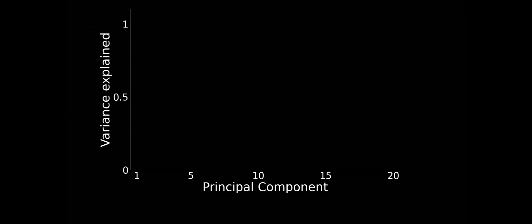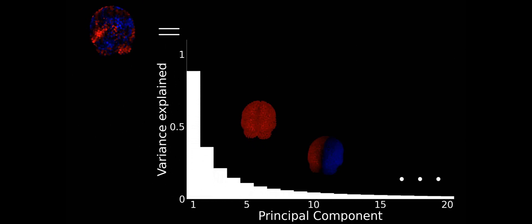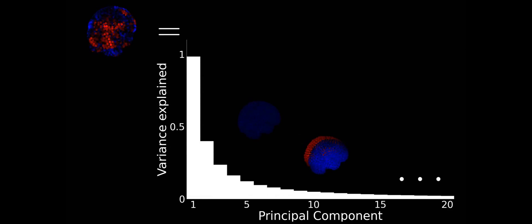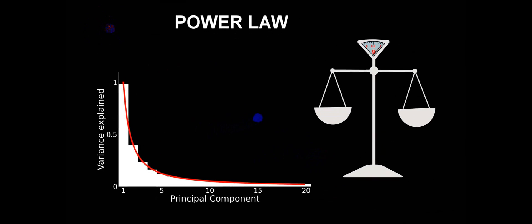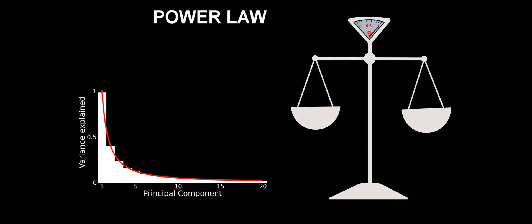Now what happens at the critical point? Close to the phase transition, the spectrum of principal components develops a power law, a signature of scaling variance. This means that there is a vast repertoire of dynamical modes present with hierarchically structured importance.